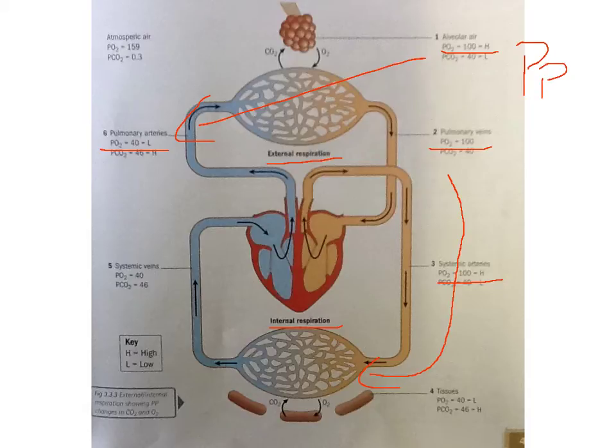Compare that figure to the partial pressure of oxygen in the muscle tissues, which is only 40 - that's low. As with external respiration, because you've got a big diffusion gradient between 100 and 40, the oxygen will diffuse easily from the capillaries in the muscles into the muscle tissue itself.